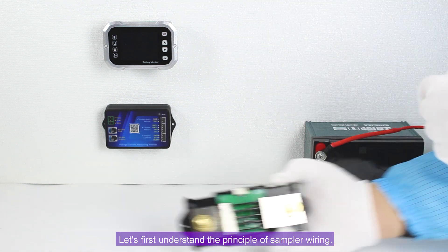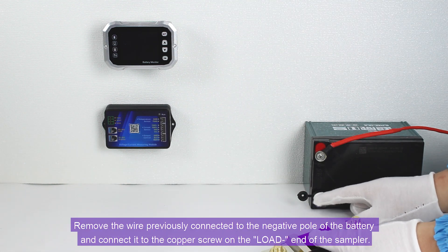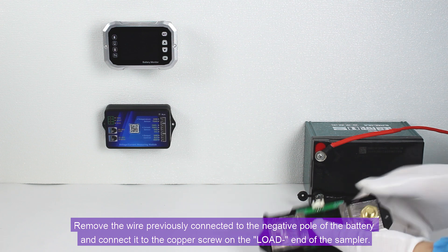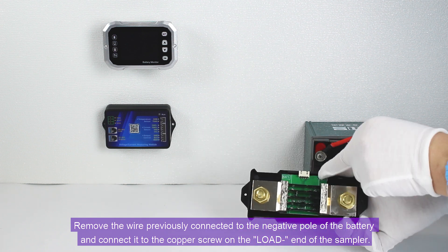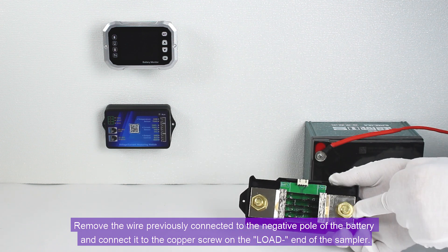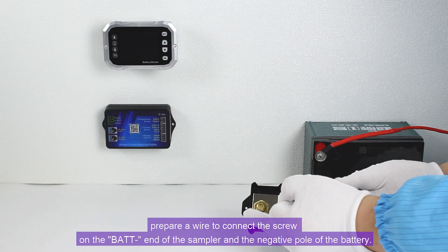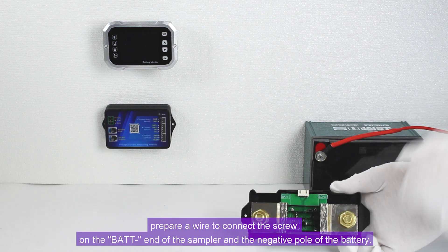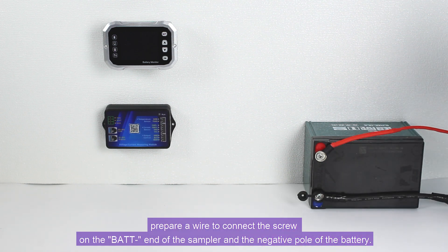Let's first understand the principle of sampler wiring. Remove the wire previously connected to the negative pole of the battery and connect it to the copper screw on the load end of the sampler. Then, prepare a wire to connect the screw on the bat end of the sampler and the negative pole of the battery.